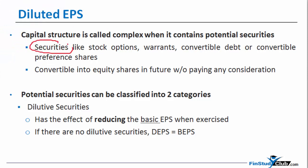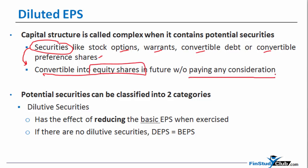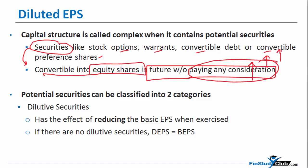What is a potential security? It is a security which exists in non-equity form as of today. It could be an option, a warrant, a convertible debt (as in our example), or convertible preference shares. They are non-equity right now, but because conditions have already been met, they are convertible into equity shares without paying any consideration. The moment consideration comes in, the capital base goes up, the profit pie grows, and the new investor won't mind sharing a lower percentage of the greater pie.